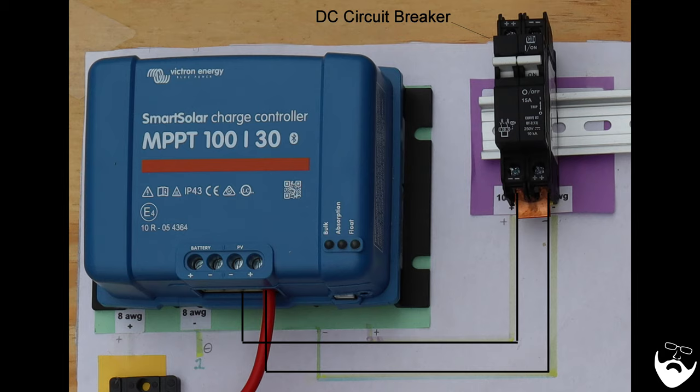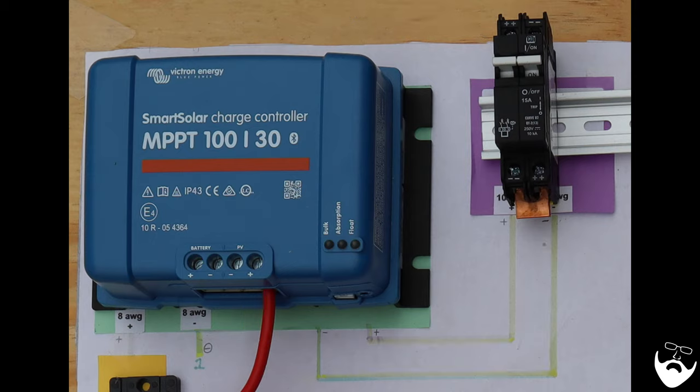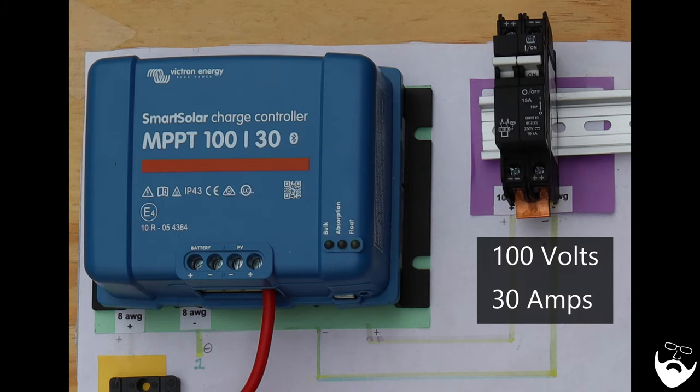From the DC breaker the wire enters a solar charge controller. Solar charge controllers are rated by voltage and current. For example, this Victron solar MPPT 100/30 charge controller will handle an open circuit voltage of 100 volts and a maximum charge current of 30 amps.